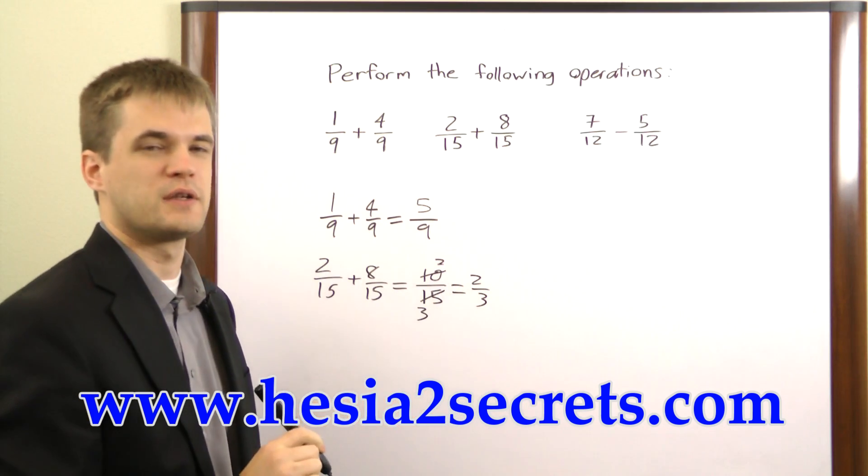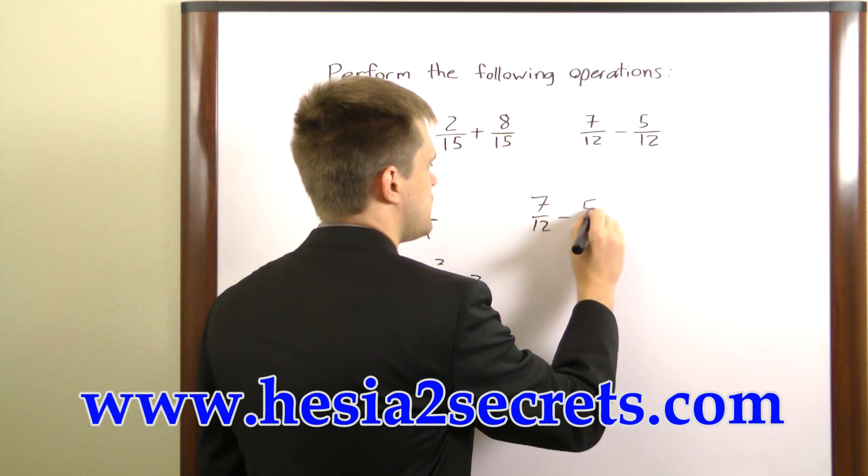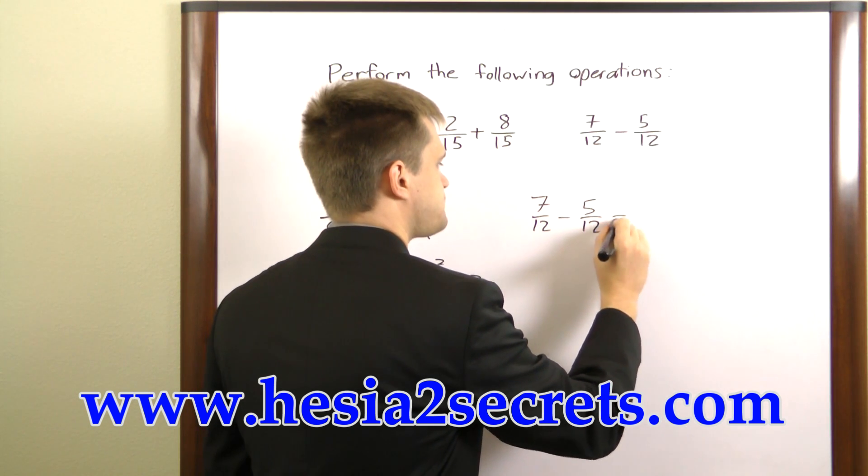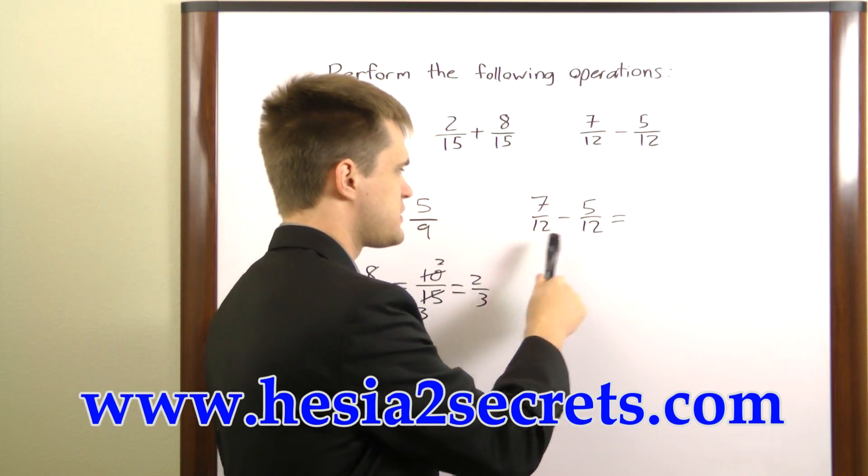Let's look at one final example. 7 over 12 minus 5 over 12. Now this is subtraction but we're going to treat it basically the same as addition.